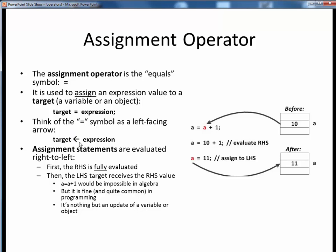Again, what this means is that the right-hand side expression is fully evaluated, and then the left-hand side variable is assigned that single right-hand side value. Perhaps this example on the right will drive home the point for us. An expression such as this one would be impossible in algebra because there is no possible value of a that satisfies this, but it's actually very common in programming.